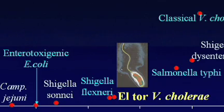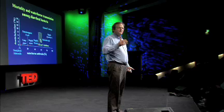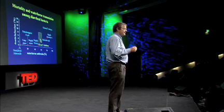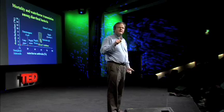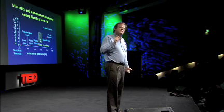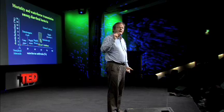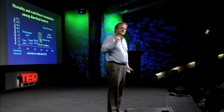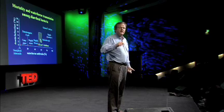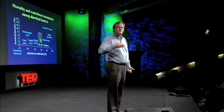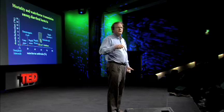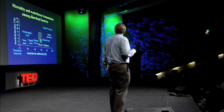If an organism produces a lot of toxin, after a few days of infection, the fecal material is cloudy water — a drop of which might contain a million diarrheal organisms. If the organism produced a lot of toxin, you might find 10 million or 100 million. If it didn't produce much toxin, you'd find a smaller number.